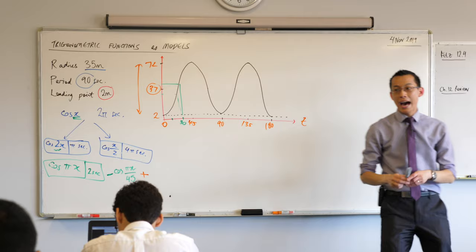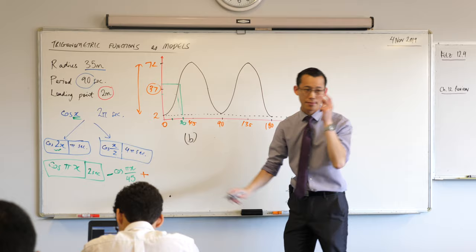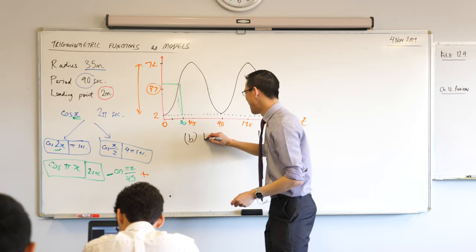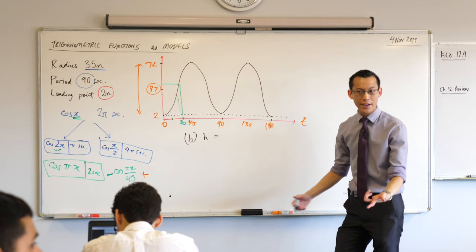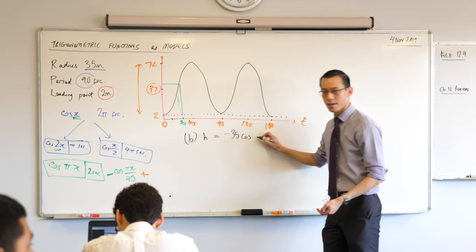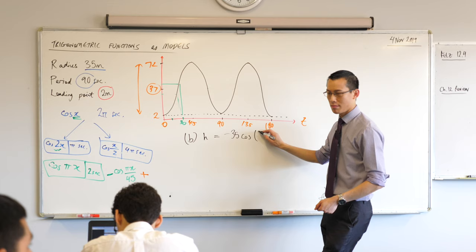Now, how do we actually punch in this number? What we've got for part B? We've got an equation for this, right? Little people. Alright, let's see if we can confirm this, right? H equals... What have I got as my actual equation? Minus 35. Minus 35. Cos... And then in the brackets here, what am I chucking in? 30. I'm chucking in... 30 over 45. 30 over 45. 30 on 45.